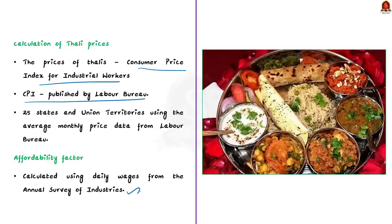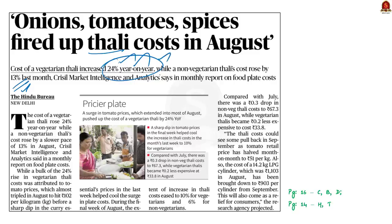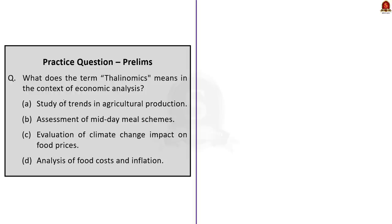Having covered all the important points about thalinomics, let us come back to the news article. According to the news article, there was a 24% increase in vegetarian thali price. Out of this 24% increase, 21% is due to the increase in tomato prices. For non-vegetarian thali, the price rise was about 13%, mainly due to the increase in the price of broiler chicken. The report said that the prices of vegetarian thali will come down in September due to a decrease in tomato prices. In this discussion, we saw what thalinomics is, its importance, how prices are calculated, and how the affordability factor is calculated.